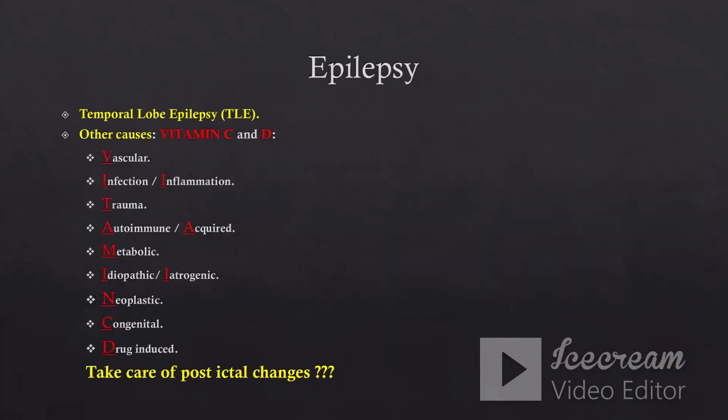In our routine approach for any case of epilepsy, first we will search for Temporal Lobe Epilepsy, as we discussed in the first two parts, and Temporal Lobe Epilepsy can occur at any age group. Once we exclude or rule out Temporal Lobe Epilepsy, we need to focus on other causes for epilepsy and I use a mnemonic term: Vitamin C and D. Maybe vascular — vascular is less common to cause epilepsy, but it should be put in our consideration.